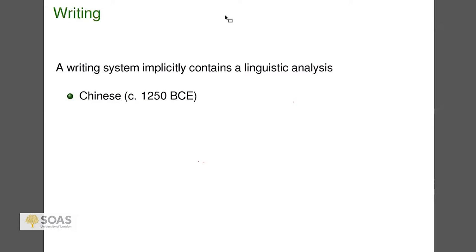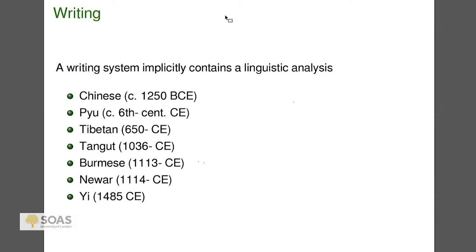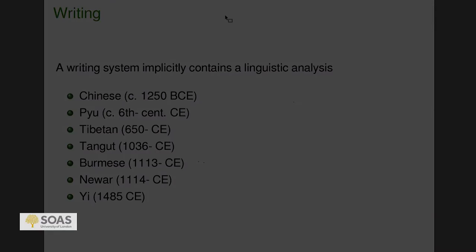Chinese from 1250 BCE has a logographic script with a syllable-based phonology. Piu, which you already saw, is a segmental phonology based on a Brahmi script. Tibetan, Tangut — which is more Chinese-style script and gives even less information about pronunciation — Burmese, Newar, and Yi. That gives you a sense of the accumulation of languages with a written tradition over time, each of which has some analysis of segmental phonology and syllable structure.